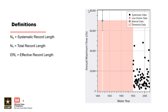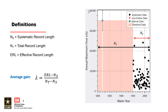We want to share a few basic definitions. The systematic record length is the total number of years of systematic data. The total record length is the total number of years of data, including all the systematic data and any historic flow intervals or perception thresholds. The effective record length will generally fall between these two values. We can estimate the value of the additional information provided by historic flow intervals and perception thresholds by calculating the average gain. Data with smaller uncertainty, such as a historic flow interval with small uncertainty, will generally provide a larger average gain compared to data with larger uncertainty, such as a perception threshold.